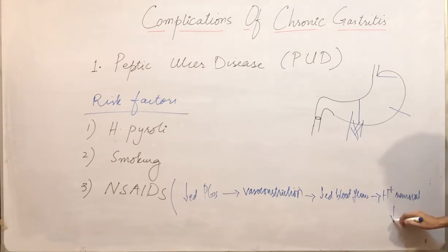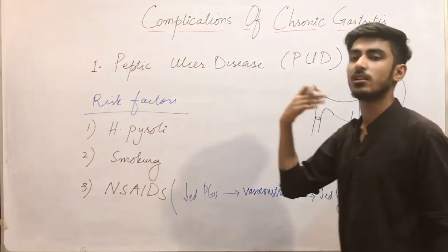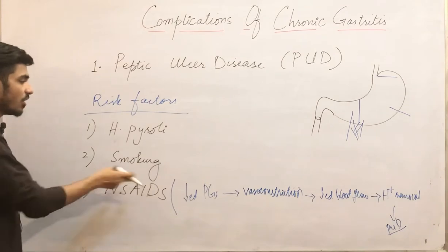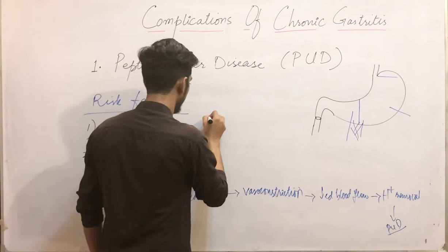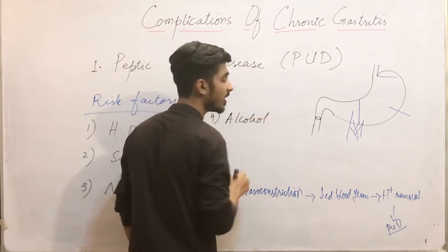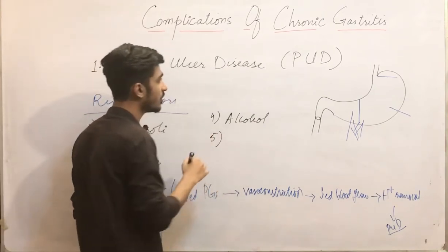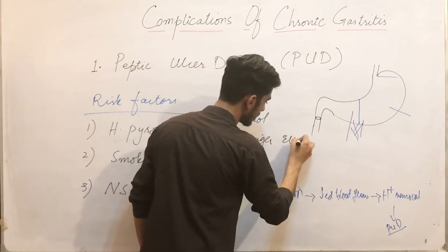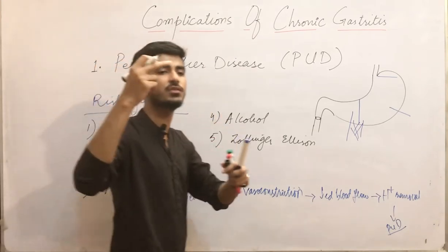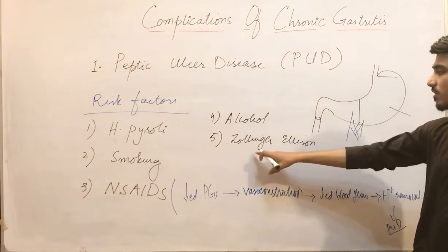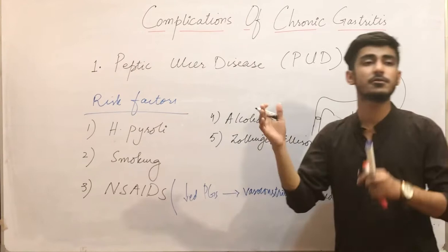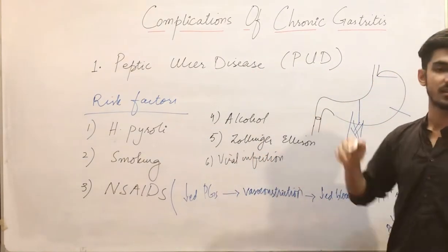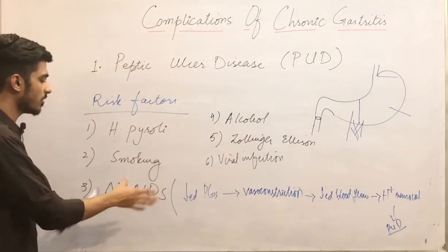If proton removal is delayed, it leads to increased acid concentration in the stomach, which leads to gastritis and further to peptic ulcer disease. This is the mechanism by which NSAIDs are a risk factor. Additional risk factors include alcohol consumption and Zollinger-Ellison syndrome, which is characterized by increased secretion of gastric acid leading to peptic ulcer disease. Certain viral infections can also lead to peptic ulcer disease.